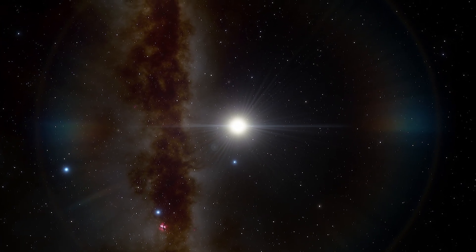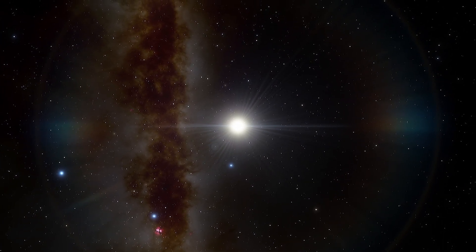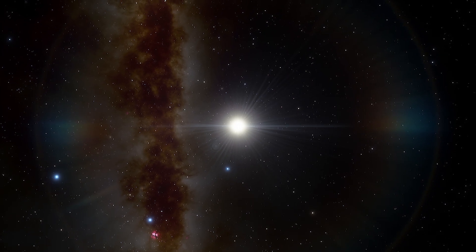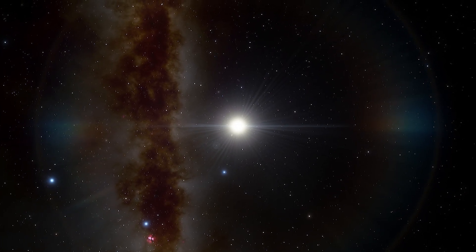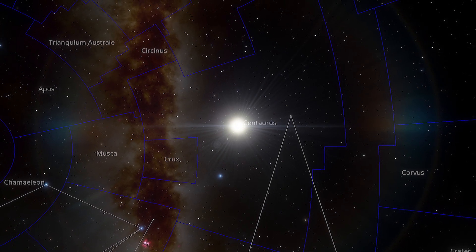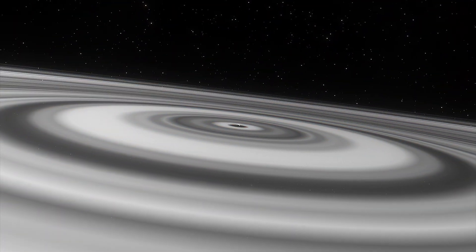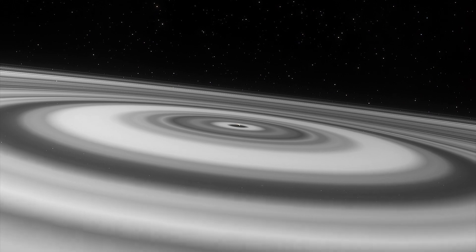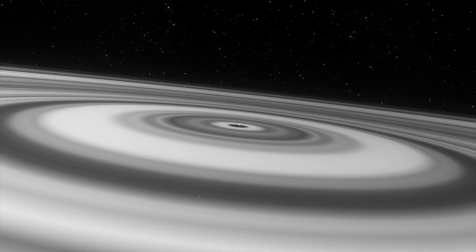There's a young brown dwarf planet orbiting a very young sun-like star about 420 light years away from Earth toward the constellation Centaurus. What's interesting about this world is the truly colossal size of its rings.